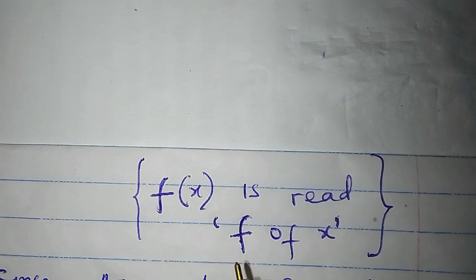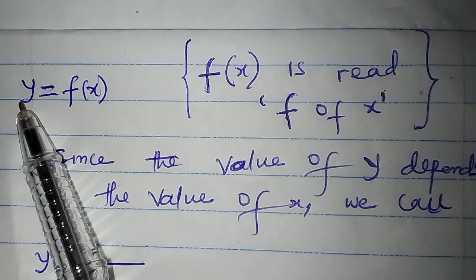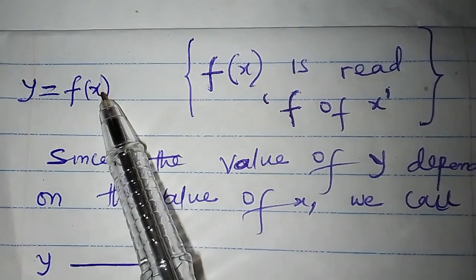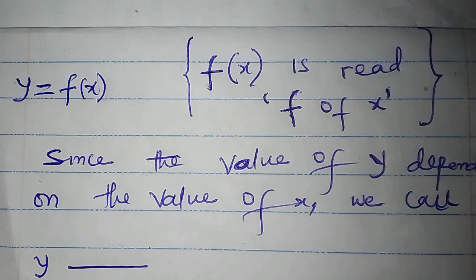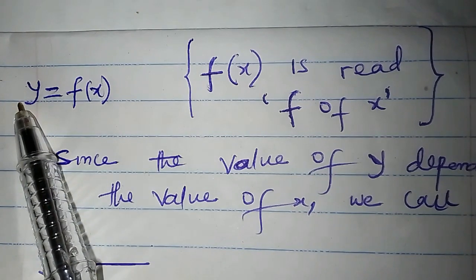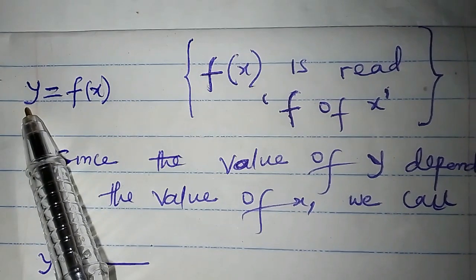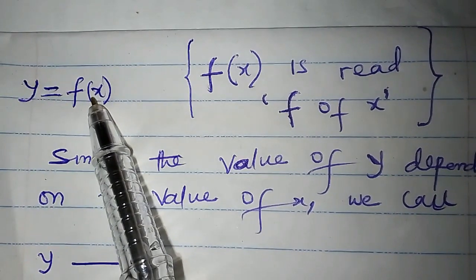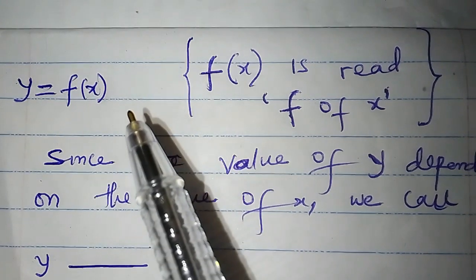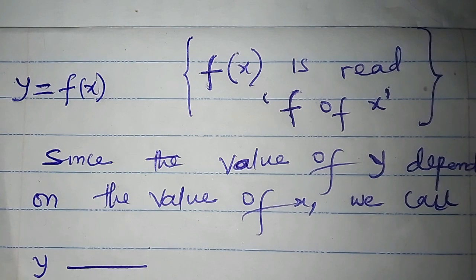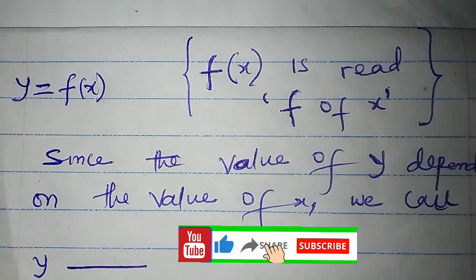The value of y depends on the value of x — whatever x is, it will produce a unique value of y. Since the value of y depends on the value of x, we call y the dependent variable and x the independent variable. This has been an introduction to functions. In the next video, we are going to talk about the domain of a function and solve some problems. Don't forget to subscribe, like, and share this video with your friends and coursemates. I'll see you in the next video.